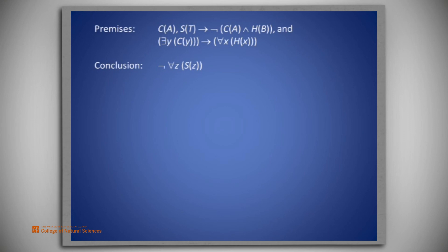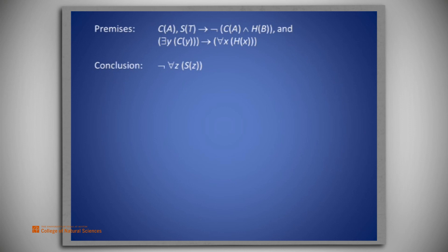Let's begin by looking at the conclusion. To simplify our consideration of a proof, let's begin by ignoring all of the quantifications. The conclusion asks us to show s is false, and the second premise would give us s is false if we were able to show c(a) and h(b) were true. So how could we show c(a) and h(b) are true? Well, c(a) is true from the first premise, and h is the consequence of the implication in the third premise. So it appears the strategy should be using c(a) to gain h, and then forming a conjunction of c(a) and h to obtain not s(t).